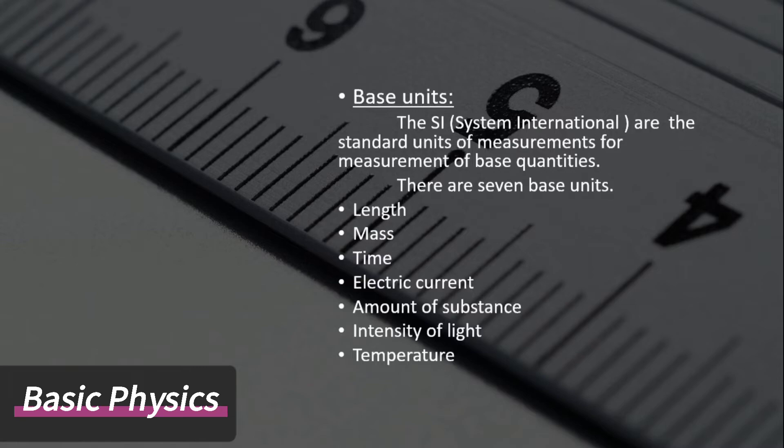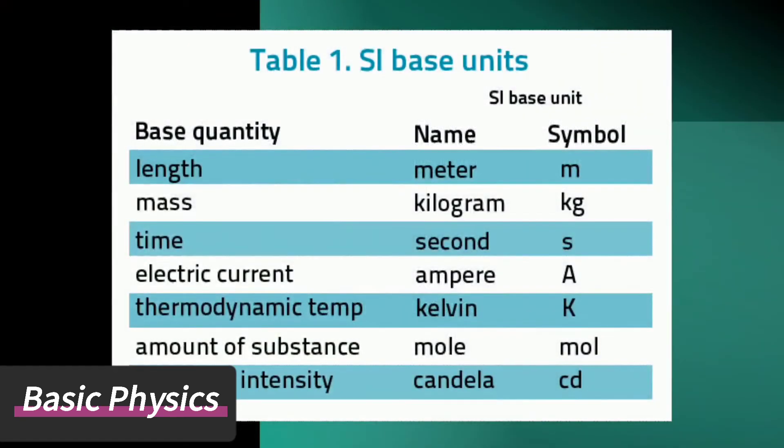Base units are of seven types. Length: its unit is meter and has symbol M. Mass: its unit is kilogram and its symbol is kg.